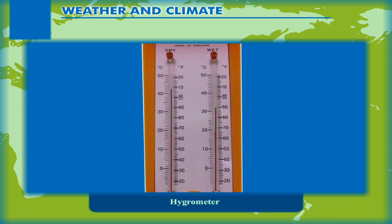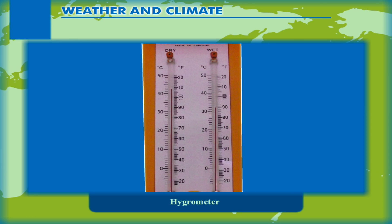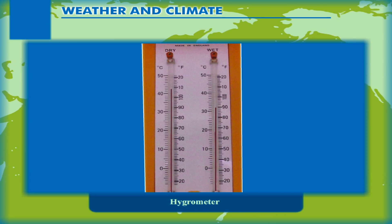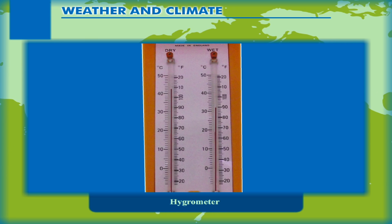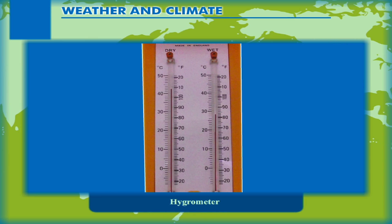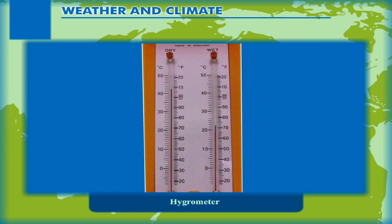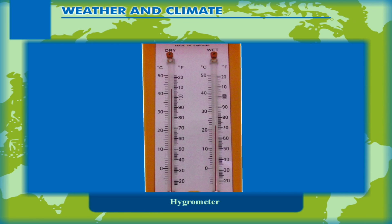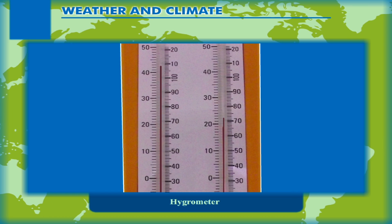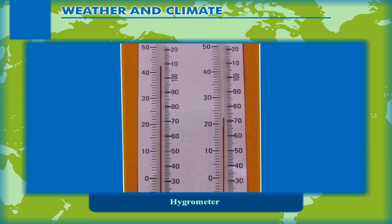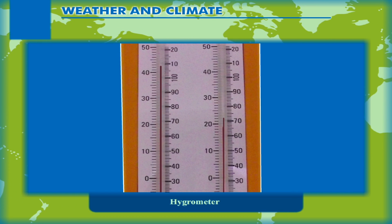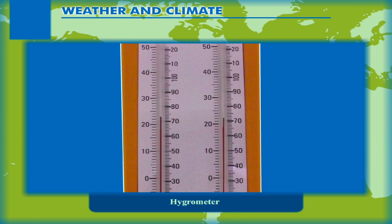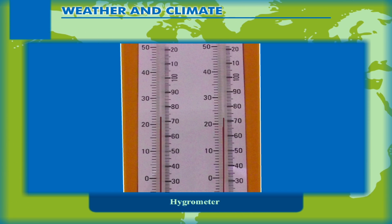The temperature of the dry bulb is higher than the wet bulb. When the temperature is high and evaporation takes place, the temperature of the wet bulb thermometer drops. This is because some energy from the wet bulb thermometer is used in evaporation. If the difference in the readings of both thermometers is more, it means low humidity; and if the readings are the same, it indicates saturated air.